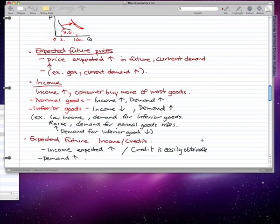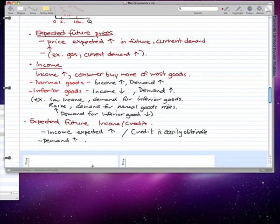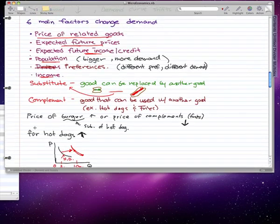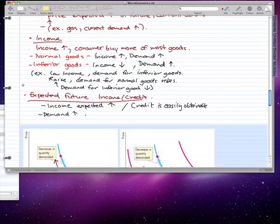So by factors, I mean the factors that we looked at in the past video. That is, expected future income, credit income, expected future prices, or income preferences, population, expected future income price, expected future prices, prices of related goods. These are the six main factors that we went through, and six main factors that I want you to focus on.